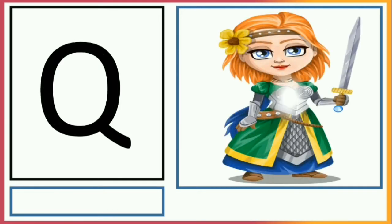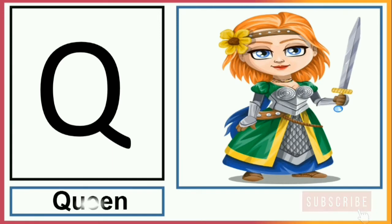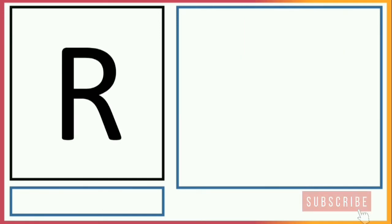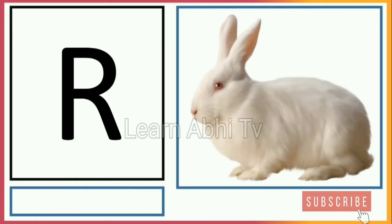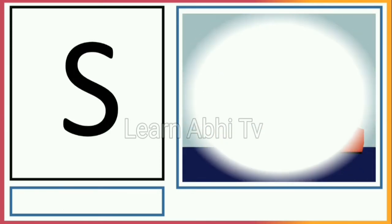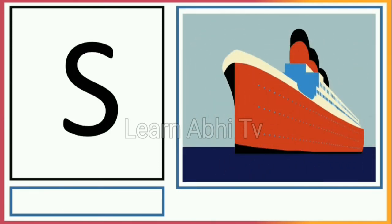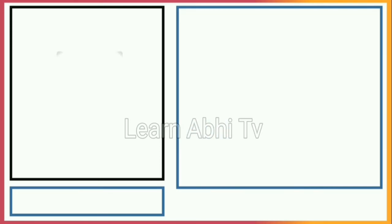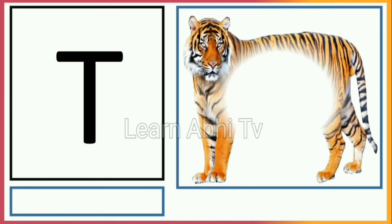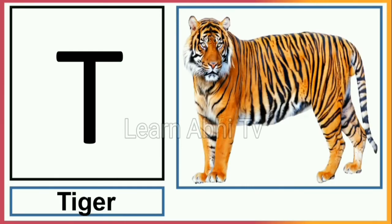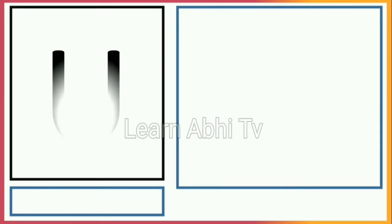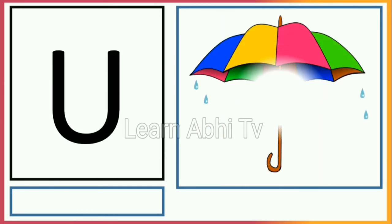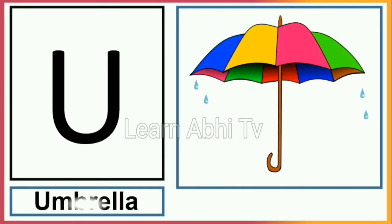Q for Queen, R for Rabbit, S for Snake, T for Tiger, U for Umbrella.